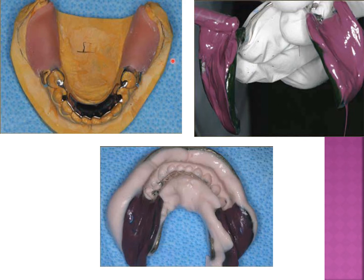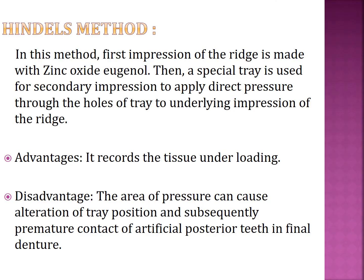In this technique, you create a tray and only record the residual ridge portion. You can see an example of recording of the edentulous arch, and then you take a pickup impression with another material — light body and alginate on top — recording both the teeth and the residual ridge in their proper positions.